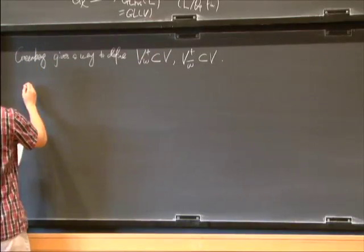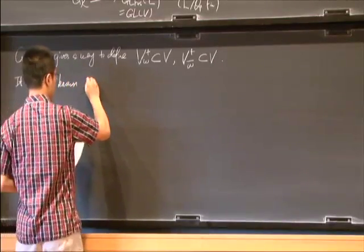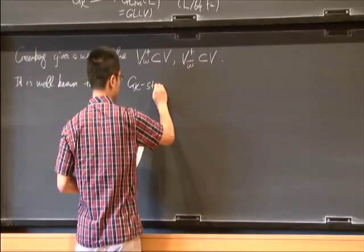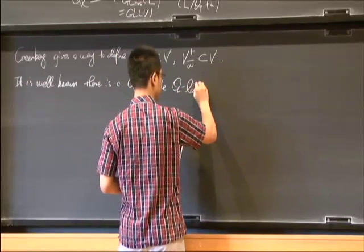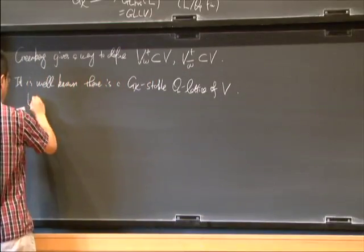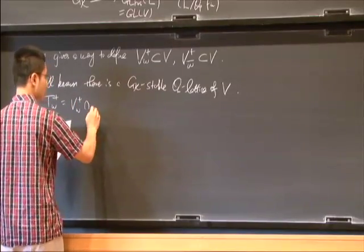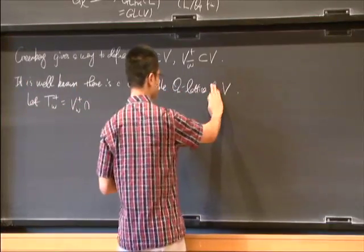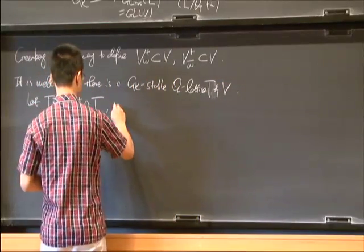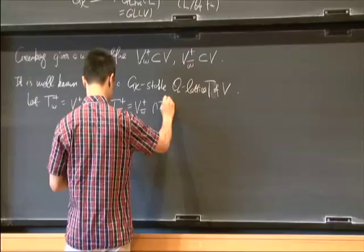On the other hand, it is well known that there is a G_K stable O_L lattice of V, and we define T_W^+ to be V_W^+ intersect with T. We define T_W-bar similarly.